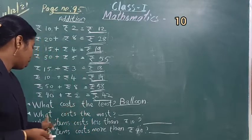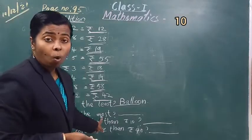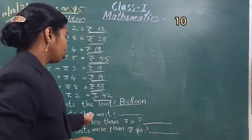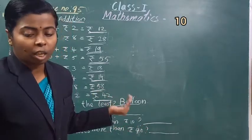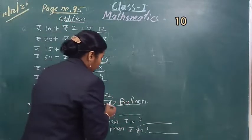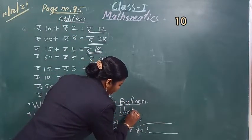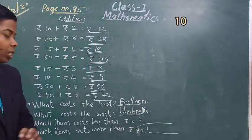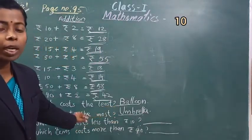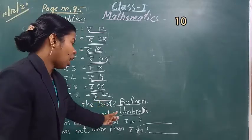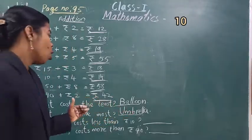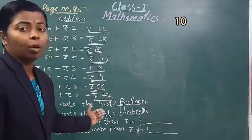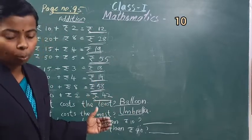Balloon का सबसे कम price है. Then second question is: what costs the most? सबसे ज़्यादा price कौन सा चीज़ का है — Umbrella. Umbrella के price देखना, सबसे ज़्यादा है. Balloon का price 25 रुपीज है, Umbrella का price 50 रुपीज है — that is the most. Okay students.